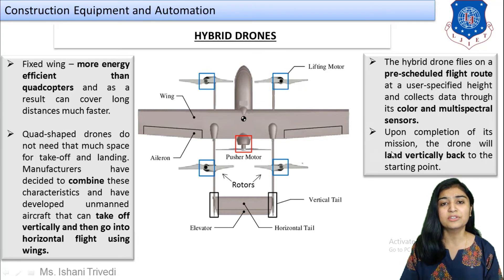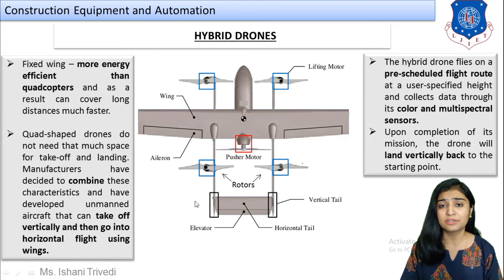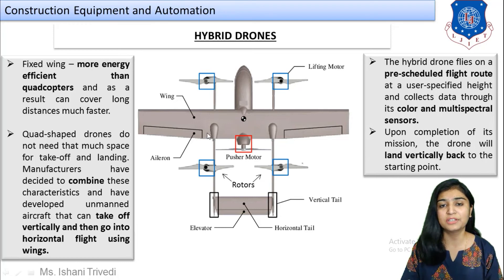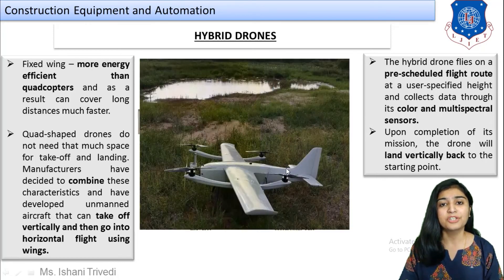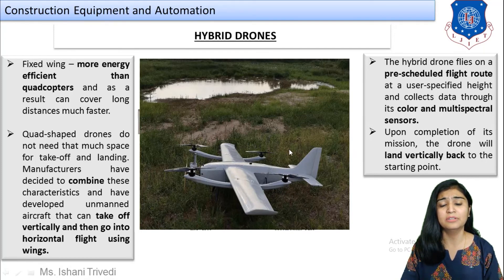Upon completion of its mission, the drone lands back vertically to the starting point, eliminating the problem of requiring a runway. This is how hybrid drones work. As seen in the picture, it has fixed aircraft wings along with quadcopter rotor blades — it is lifted vertically and then moves horizontally.